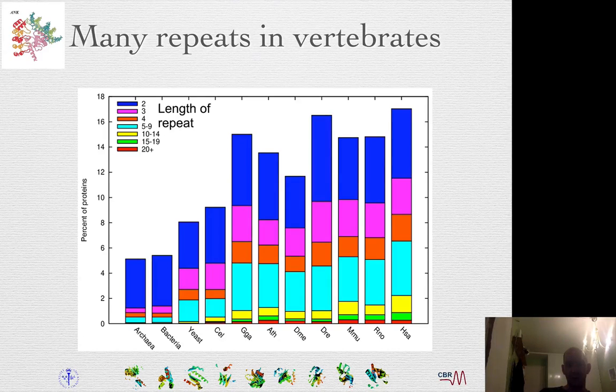So when you do this, you start to see that there are many repeats in vertebrates. So the animals have more repeats than lower type of animals. So you have human and longer repeats.